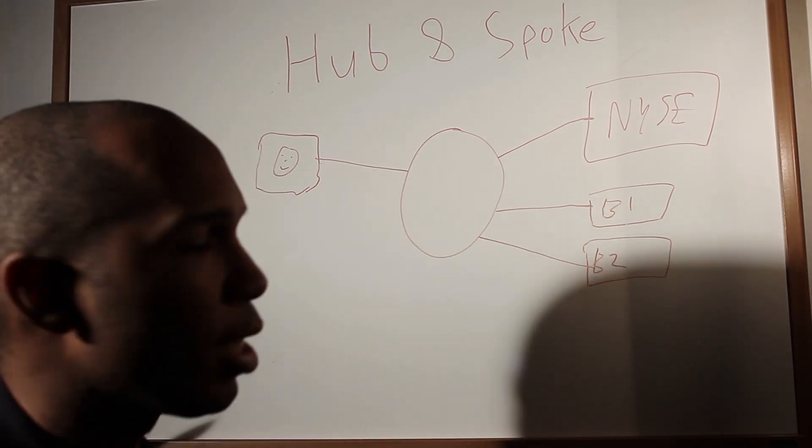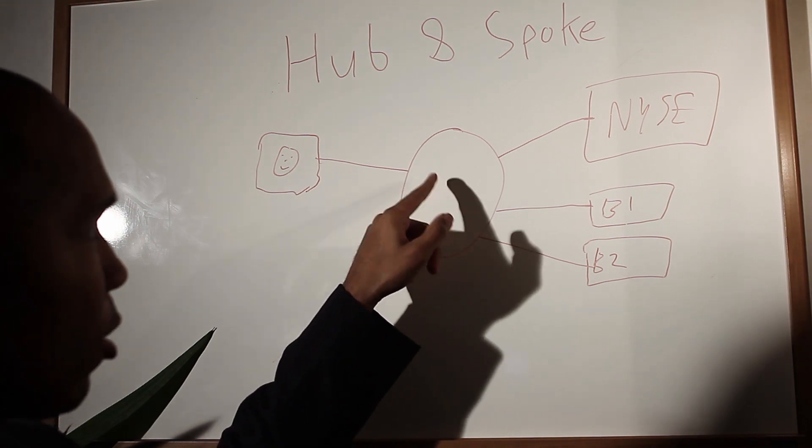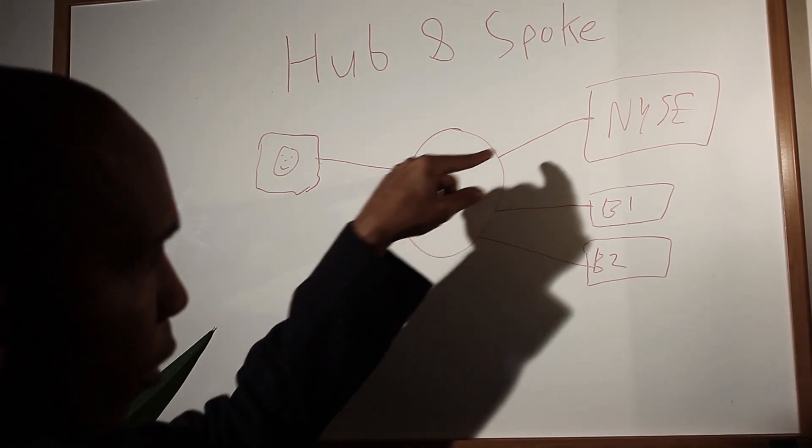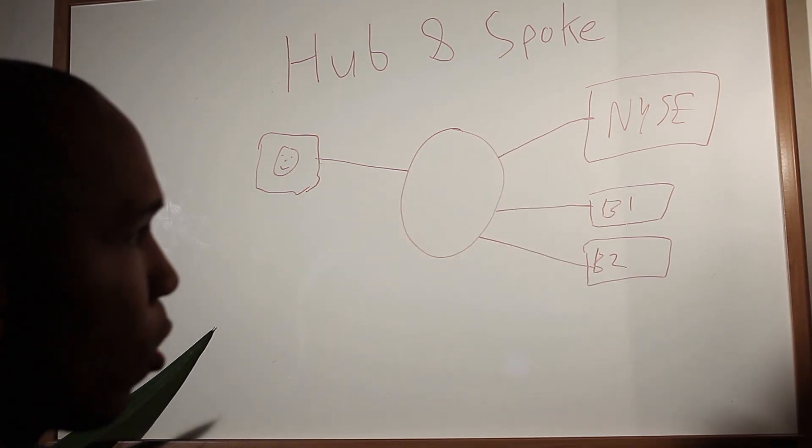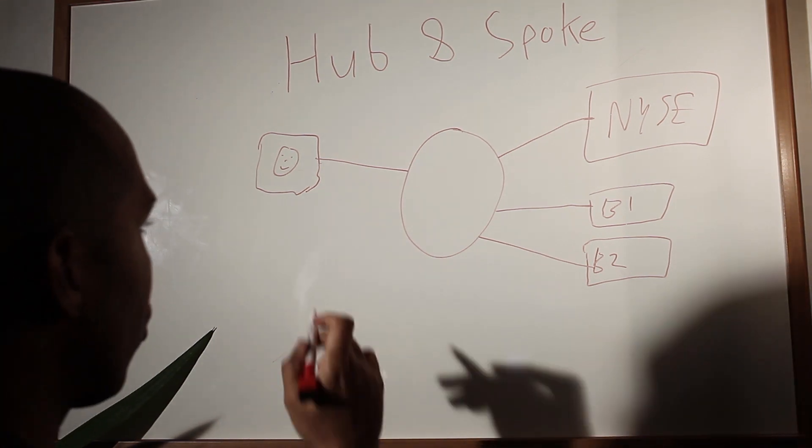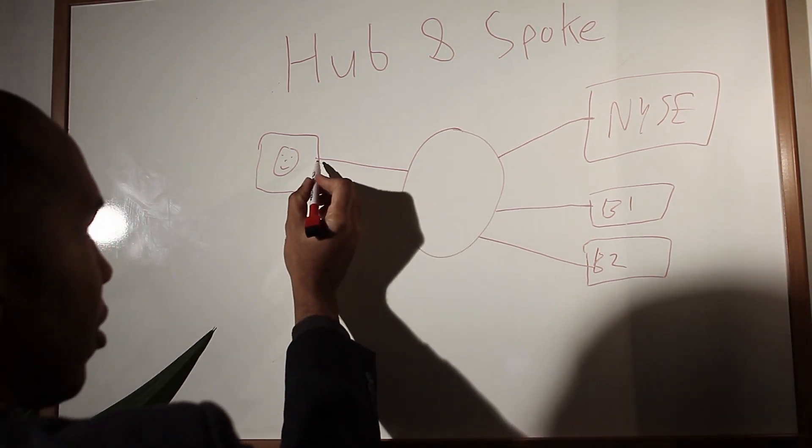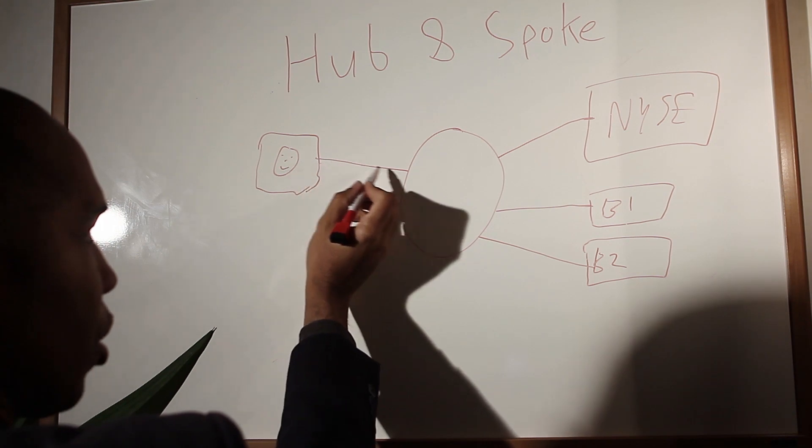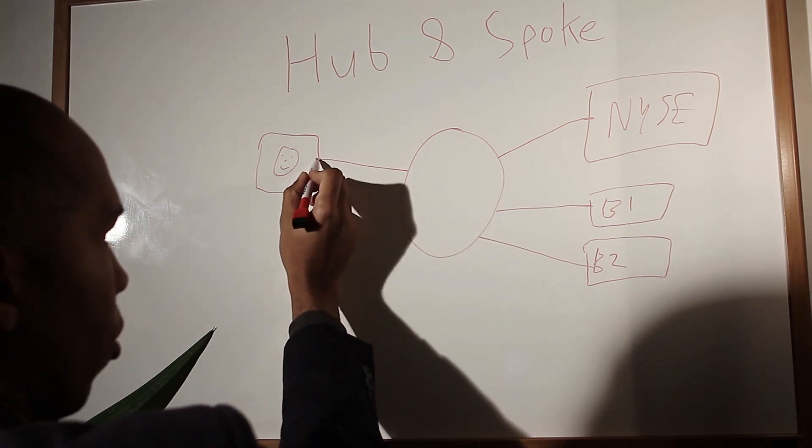So the basic idea is you can have a single connection with a hub and spoke network and via their connections, you can access all these destinations. So if I want to send an order to New York Stock Exchange, I send an order with my direct connection here to the hub. So my order goes in here.